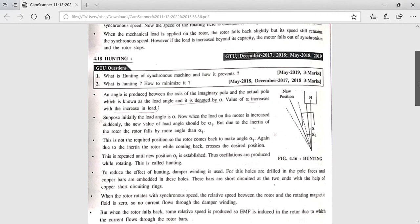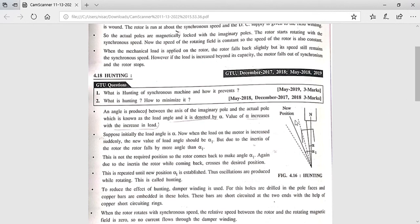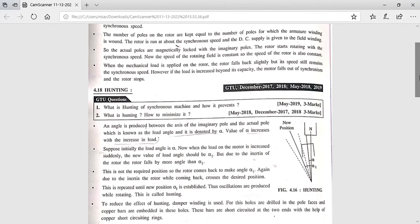We use damper winding to reduce hunting. If we use damper winding, then what will happen? Relative speed will be reduced, as well as our load angle. Alpha will be reduced, which will reduce the load angle.